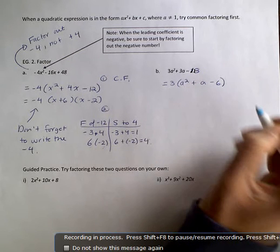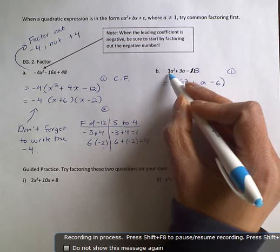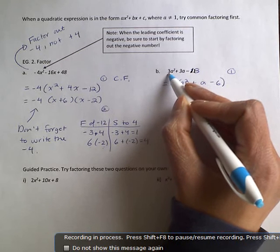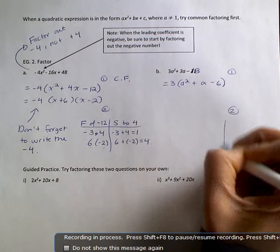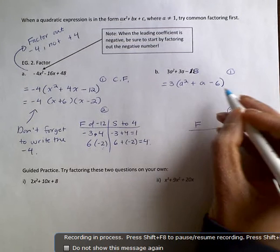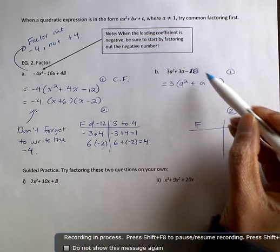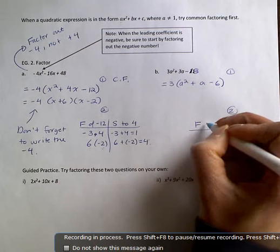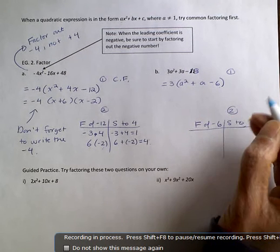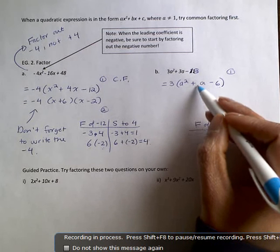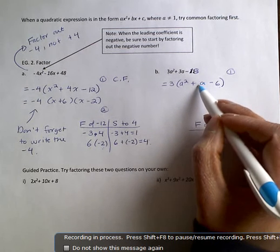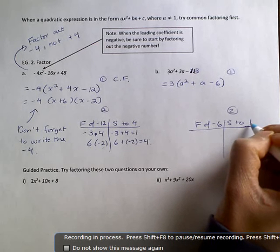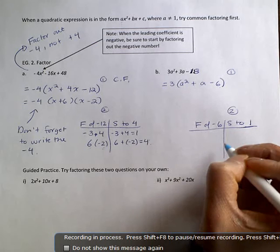So again, that's my first step. I common factor it first because a is not 1, like the questions that we did on the other side. My second step is to make my factor sum chart. So here we're looking for factors of negative 6, not the negative 18, because we've already broken this down. And they need to add to the number that's in front of the a, the coefficient of the a, which is that invisible 1 that's here. That sums up to 1. So never write a variable in this spot. It's always a number.